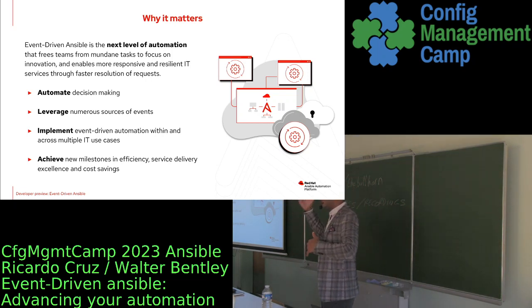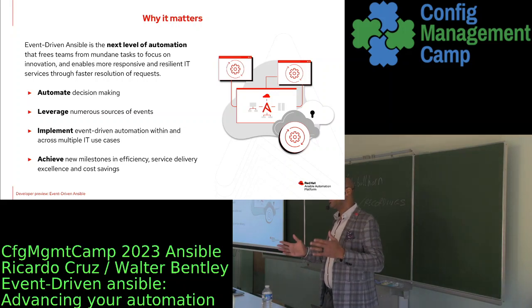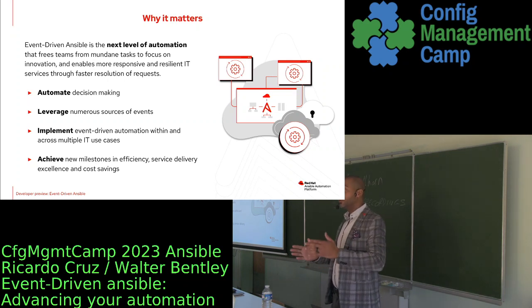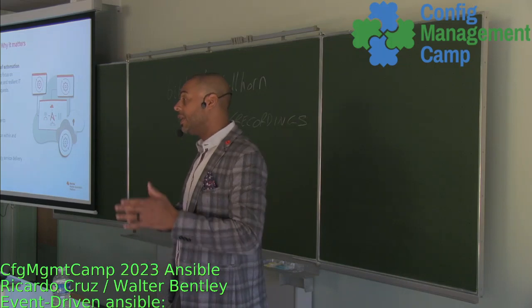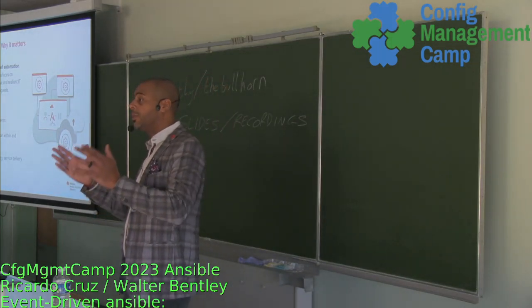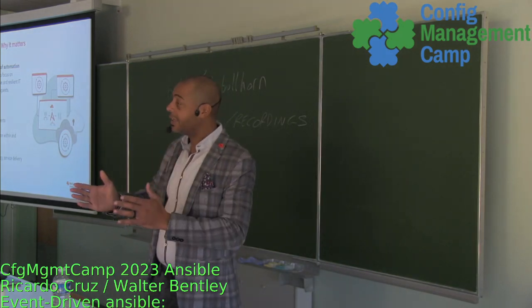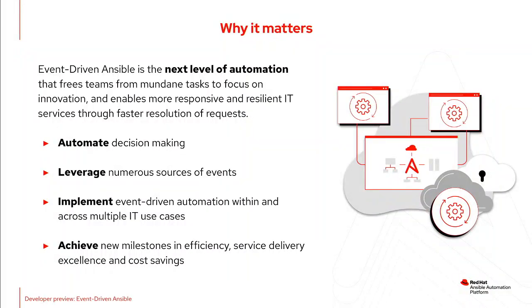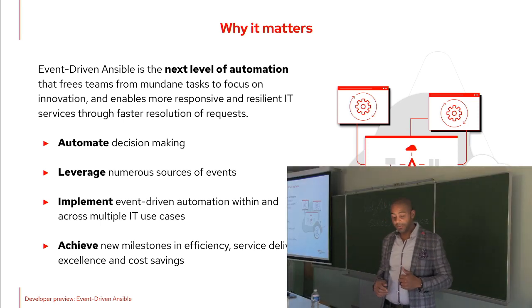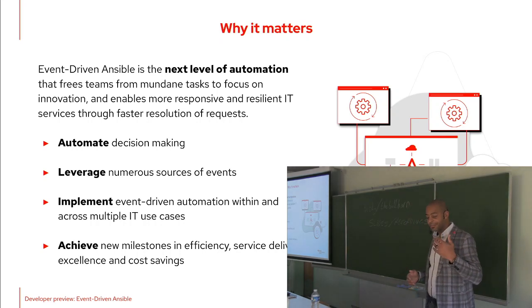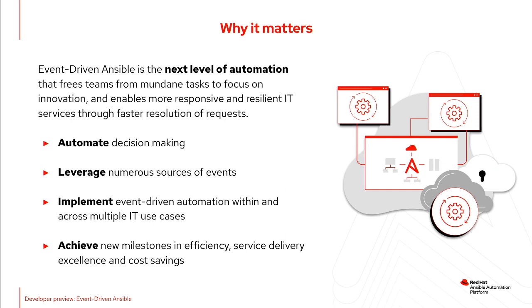There are different levels of automation maturity. Everyone starts in an infancy phase — just doing specific tasks, solving for one thing at a time. Then you move to end-to-end workflows and begin to orchestrate. Once you get that down, you move into the next phase where you begin to innovate with automation. Event-driven automation is that next step — being able to make decisions and implement it across multiple IT use cases.